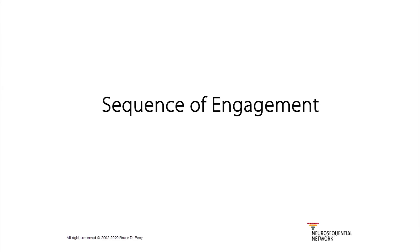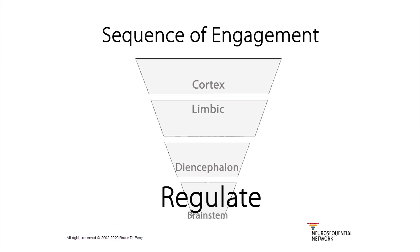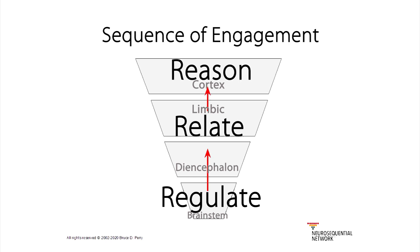So we talk about this sequence: regulate, relate, and then reason. One of the things we see happen all the time, both with parenting and coaching and teaching, is that all too often we adults try to reason with somebody before they're regulated. And of course, that never really works.